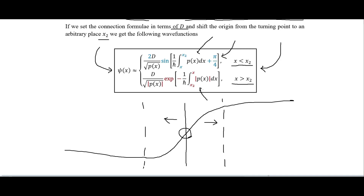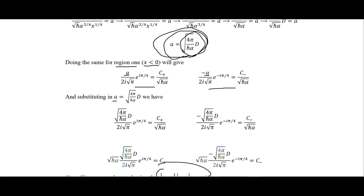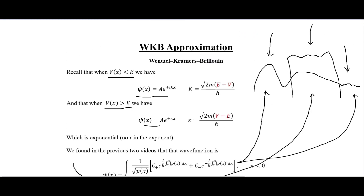The blue and red colors distinguish the key differences between the two solutions: one has the factor of 2 with the sine, while the other has the exponential with the negative sign; one integrates from x to x₂ and the other from x₂ to x; and one has +π/4 while the other has a different phase. That is how we patch the solutions together for the WKB approximation, and that covers everything I wanted to discuss about WKB.